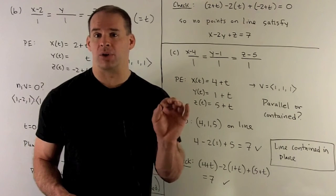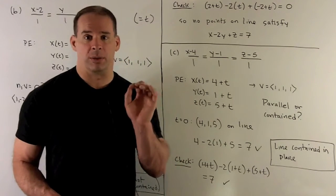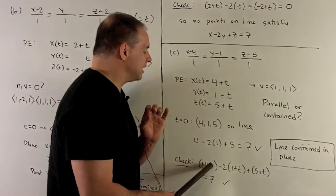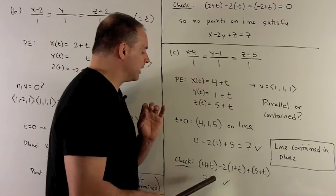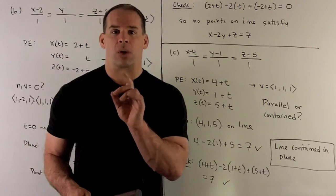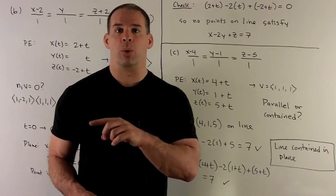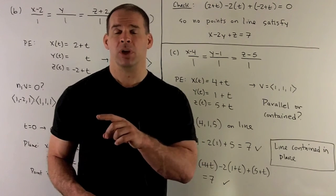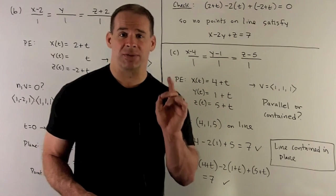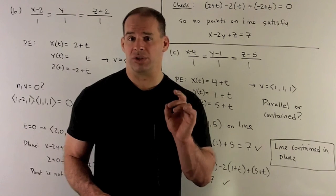We can verify by taking the parametric equations and substituting into the equation of the plane. All the t's go away and we're left with 7. This means no matter what value of t we choose — equivalently, no matter what point we pick off the line — that point satisfies the equation of the plane. So all points on the line satisfy the equation of the plane.